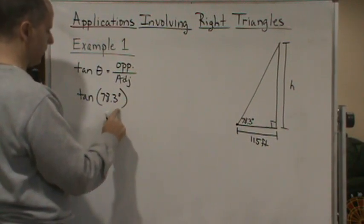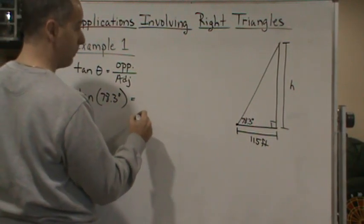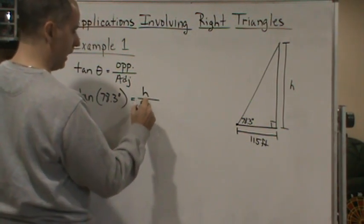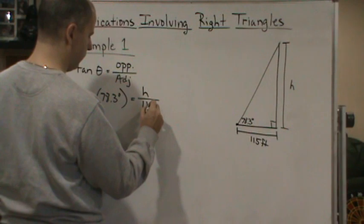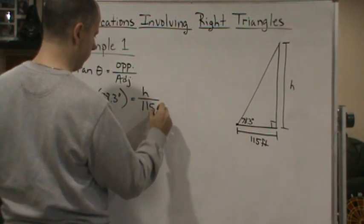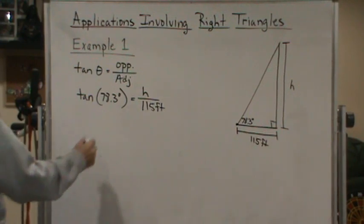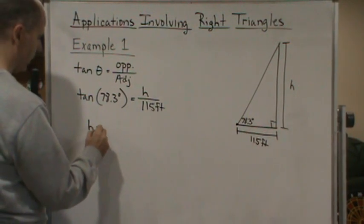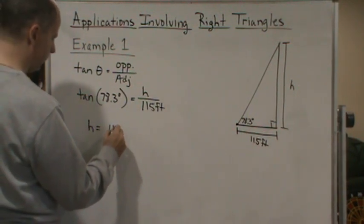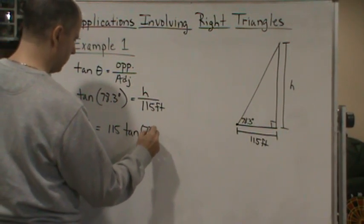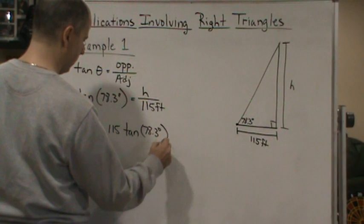So tangent of 78.3 degrees is equal to opposite, which is h, we don't know that, that's what we're trying to find, divided by the adjacent side, which is 115 feet. Okay, so now all I have to do is solve for h. So I know h is equal to 115 times the tangent of 78.3 degrees.